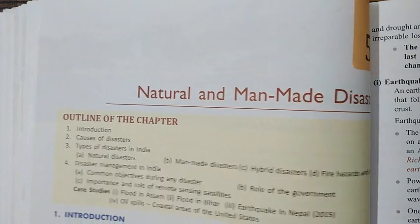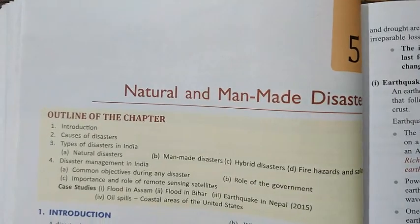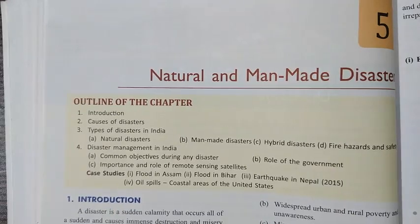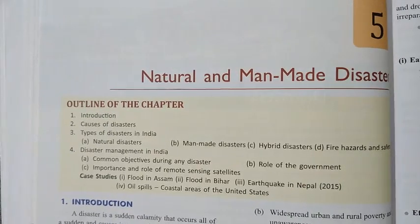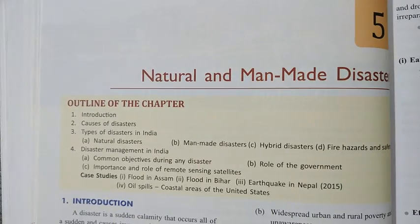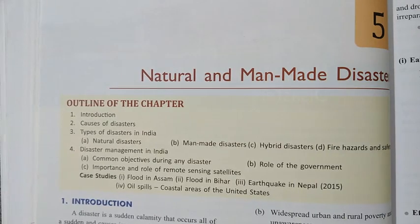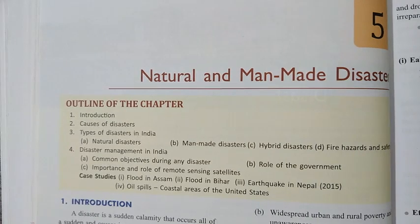Good morning dear students. Let's start the new chapter — natural and man-made disasters, Chapter 5. Disasters are caused and they can be natural or man-made. When natural and man-made effects are mixed together — meaning when man-made effects cause natural disasters — they are called hybrid disasters. We are going to see about these three types of disasters.